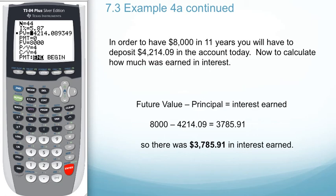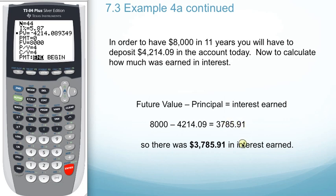In order to determine the interest, we take the future value minus the principal — so $8,000 minus the present value or principal, which is $4,214.09 — to get the interest earned of $3,785.91. And we'll see you next time.